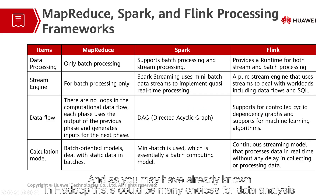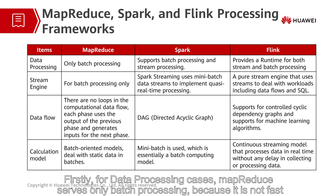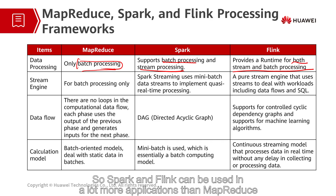As you may have already known, in Hadoop there could be many choices for data analysis. So here, we draw a comparison between MapReduce, Spark, and Flink. Firstly, for data processing cases, MapReduce serves only batch processing because it is not fast. However, both Spark and Flink support both stream processing and batch processing, so Spark and Flink can be used in a lot more applications than MapReduce.